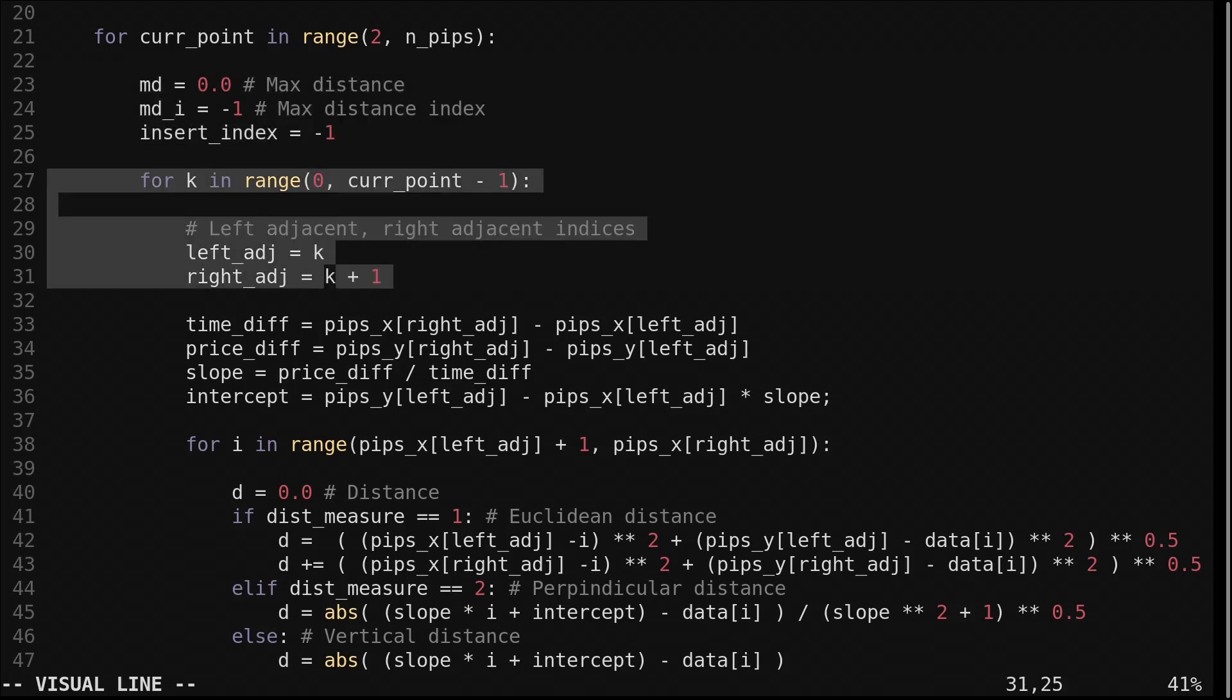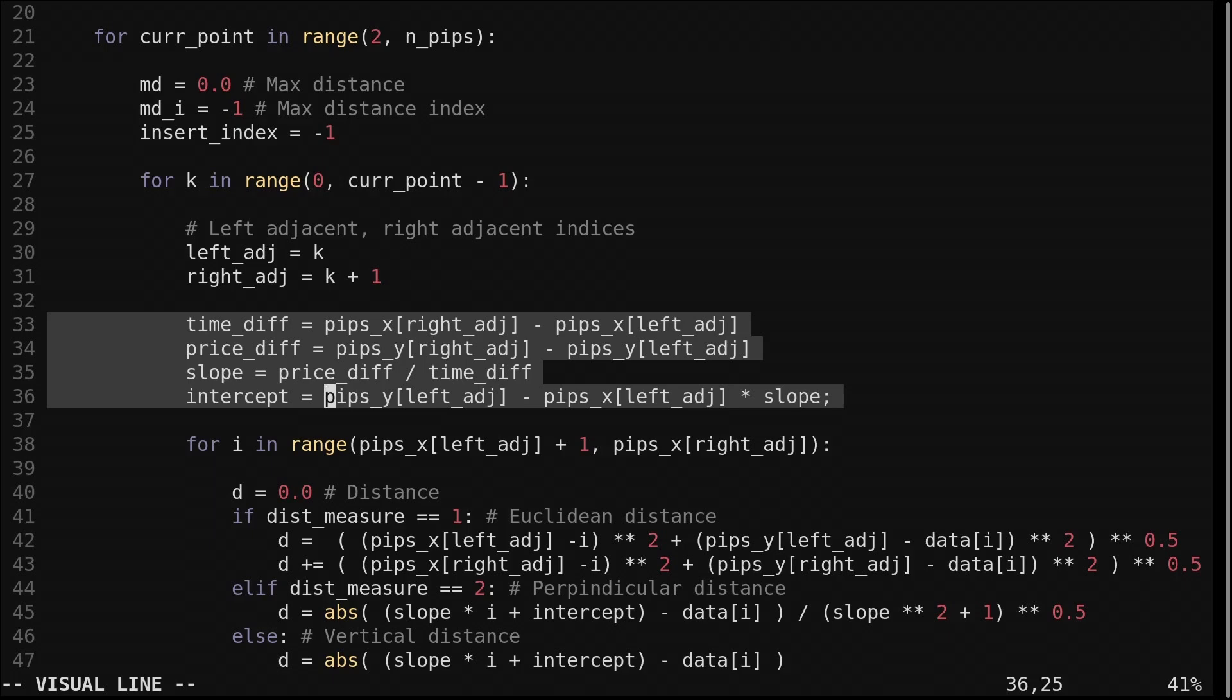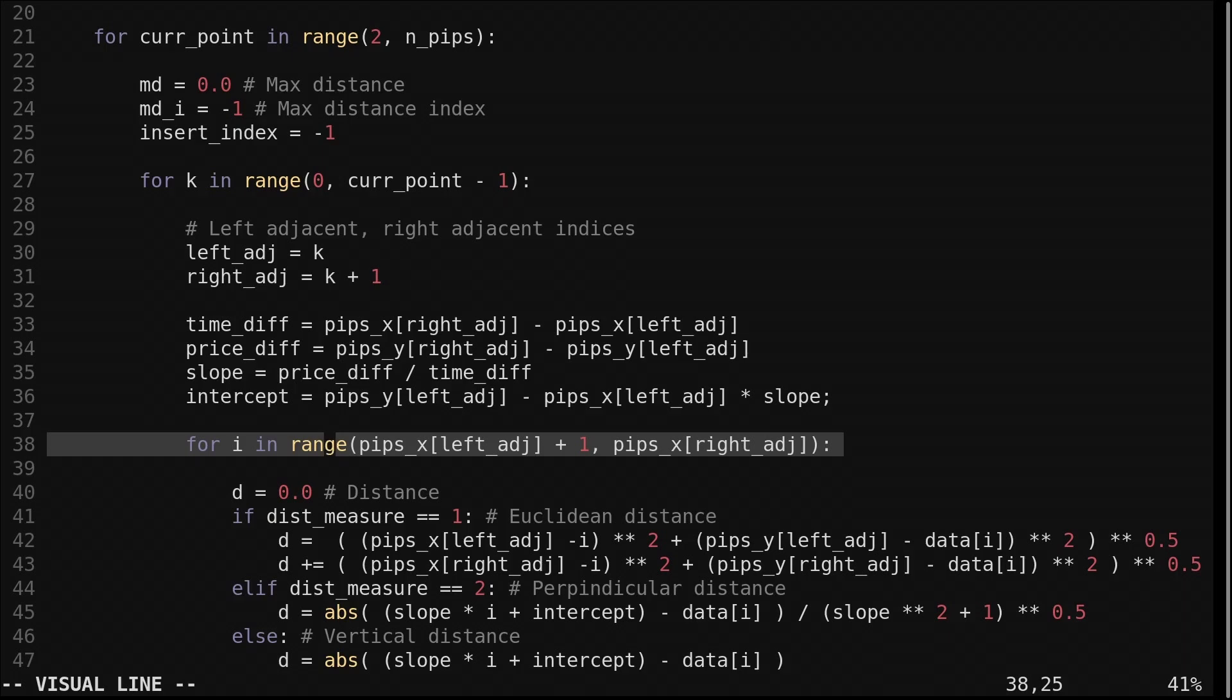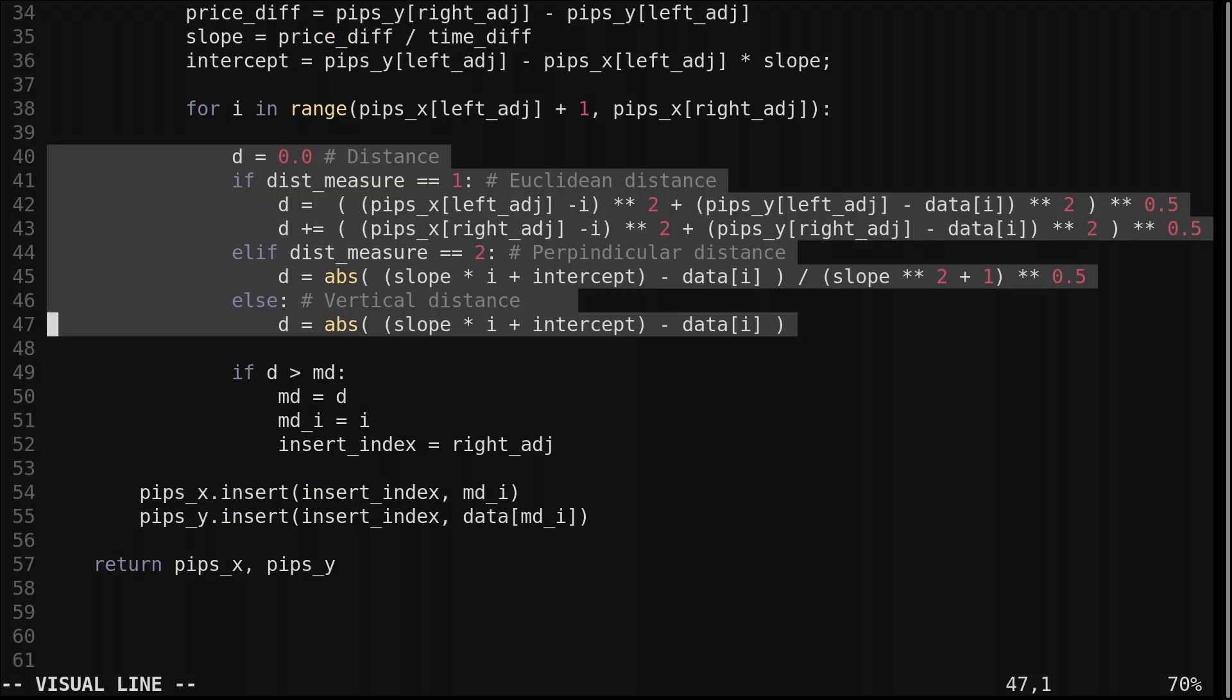We then loop through each pair of adjacent points we've found so far. We find the slope and intercept of the line between the current pair of adjacent points.